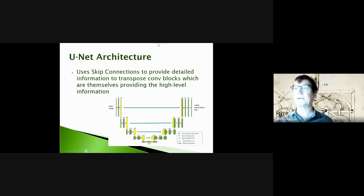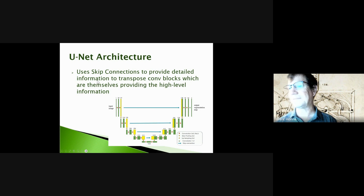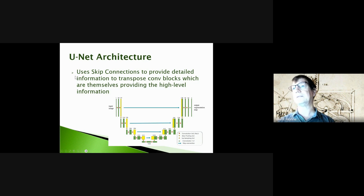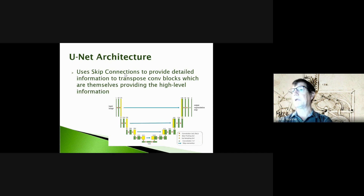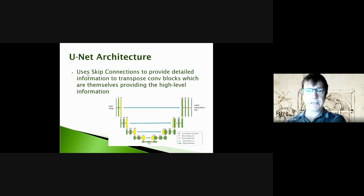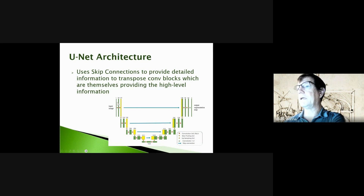That brings us to the U-Net architecture. I'll show this now and then talk about skip connections in more detail later. This architecture is also listed on Moodle. It was originally developed to process biological images — for example, from a CT scan — to isolate structures like lungs, hearts, or the clavicle.